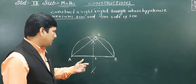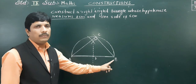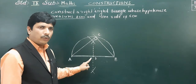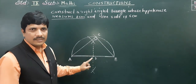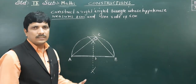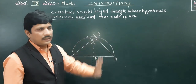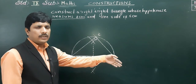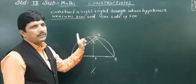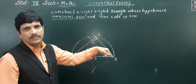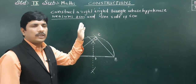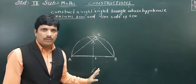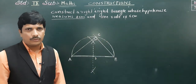To summarize the first construction: first we took AB equal to 8 centimeters as the hypotenuse. Then we found the midpoint D of AB. From D as center and AD as radius, we drew a semicircle. Then from point A, we marked 6 centimeters — it intersected the semicircle at point C. Joining C to B gave our required right triangle.